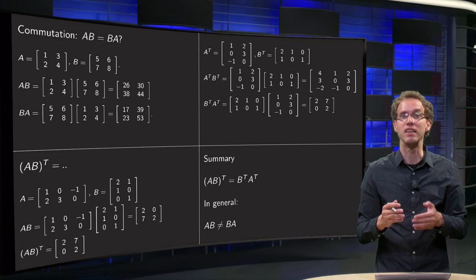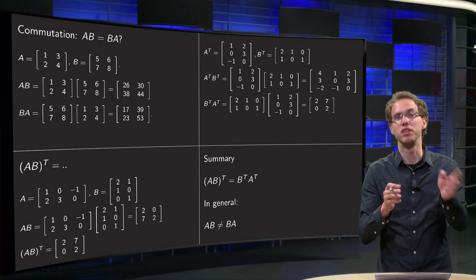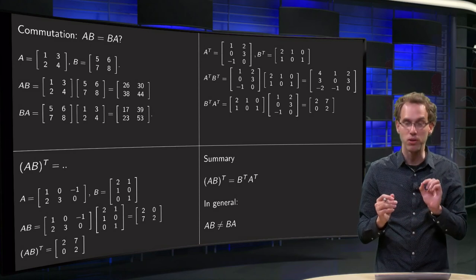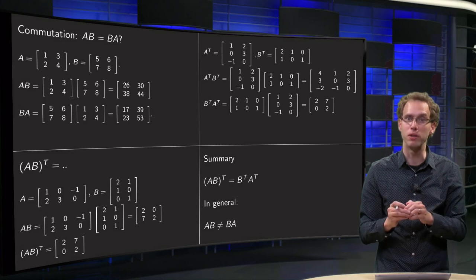And finally we find indeed AB transpose equals B transpose times A transpose. So that's true in general, but a bit annoying to prove.